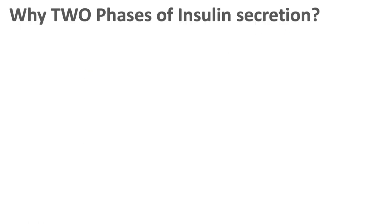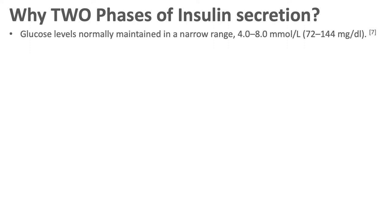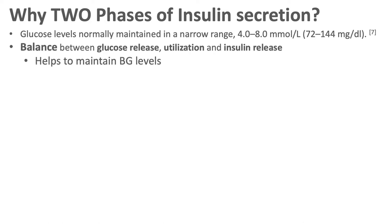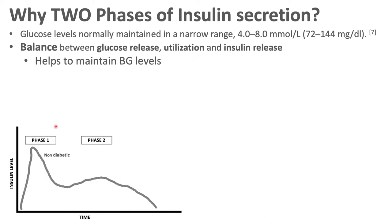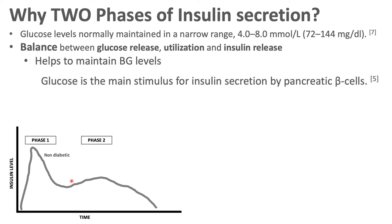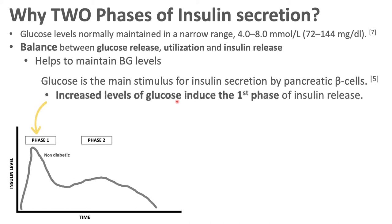So why do we have two phases of insulin secretion? Blood glucose levels are maintained in a narrow range of 4 to 8 mmol/L, with a fine balance between glucose release, utilization, and insulin release. Glucose is the major and most potent stimulus for insulin secretion. When we eat food — especially carbohydrates — blood glucose spikes, and glucose is the major contributor to the first phase of insulin release.